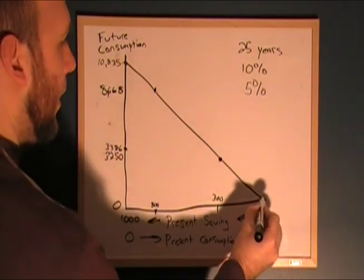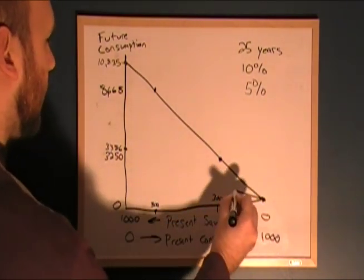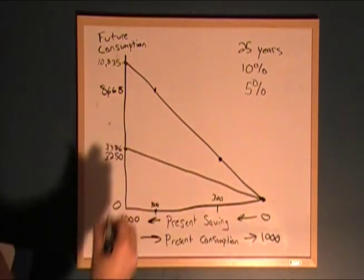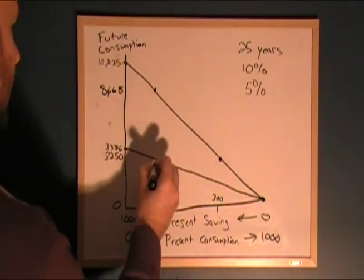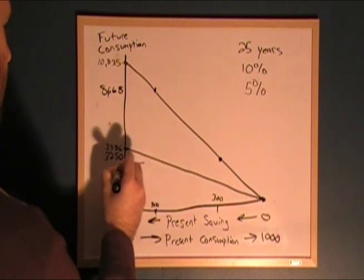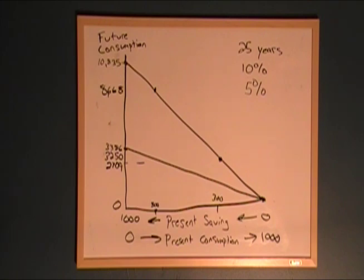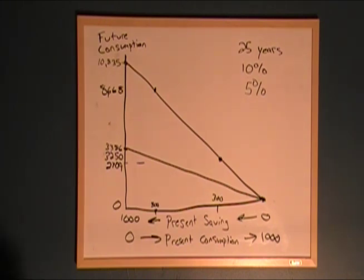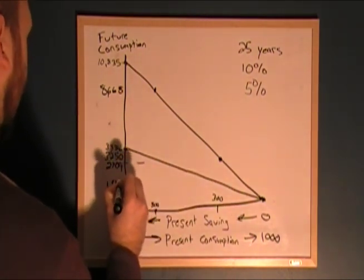That's our endpoint. If we save zero, we'll still have zero in the future. If we save $800 in the present, after 25 years we would have $2,709 to spend. And if we were to save $300 in the present, we would end up with $1,016 to spend.